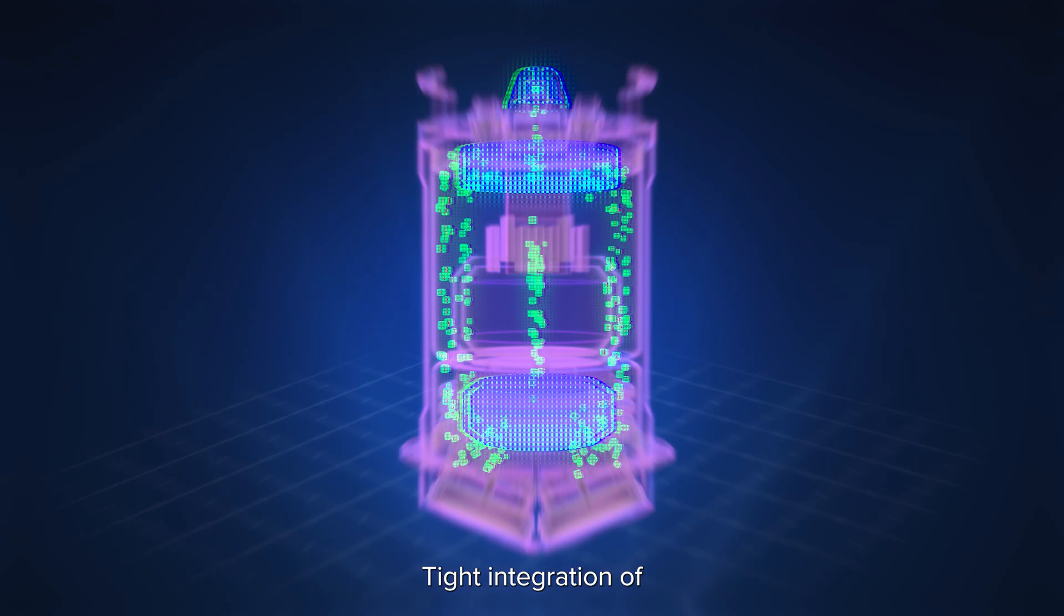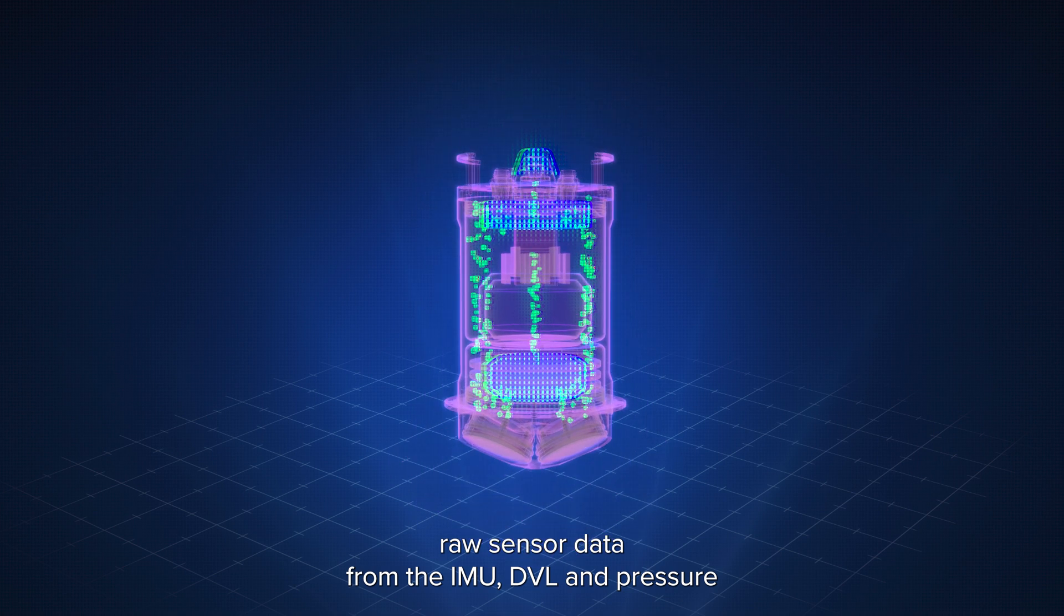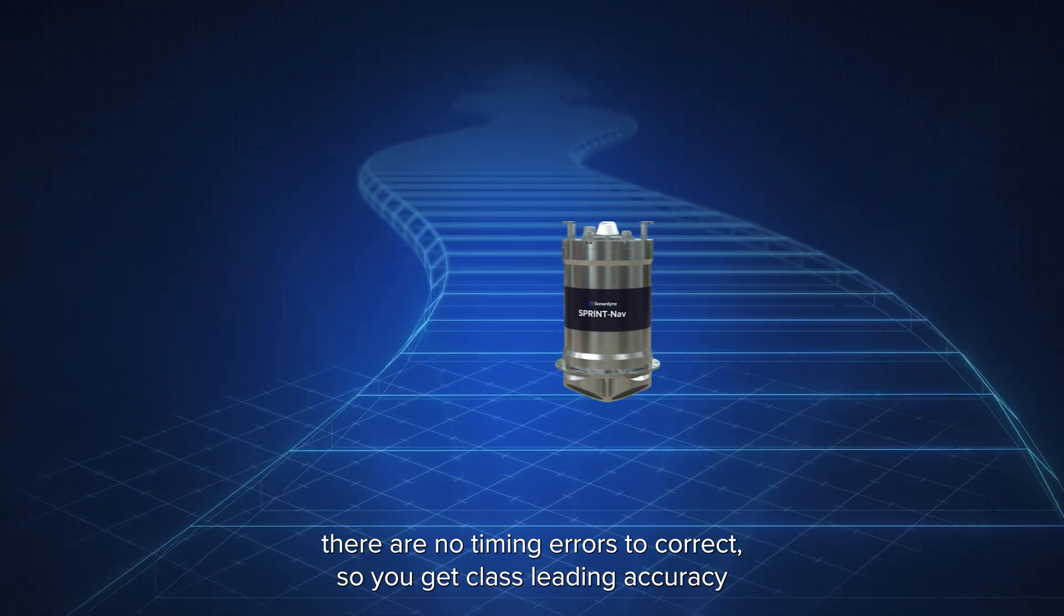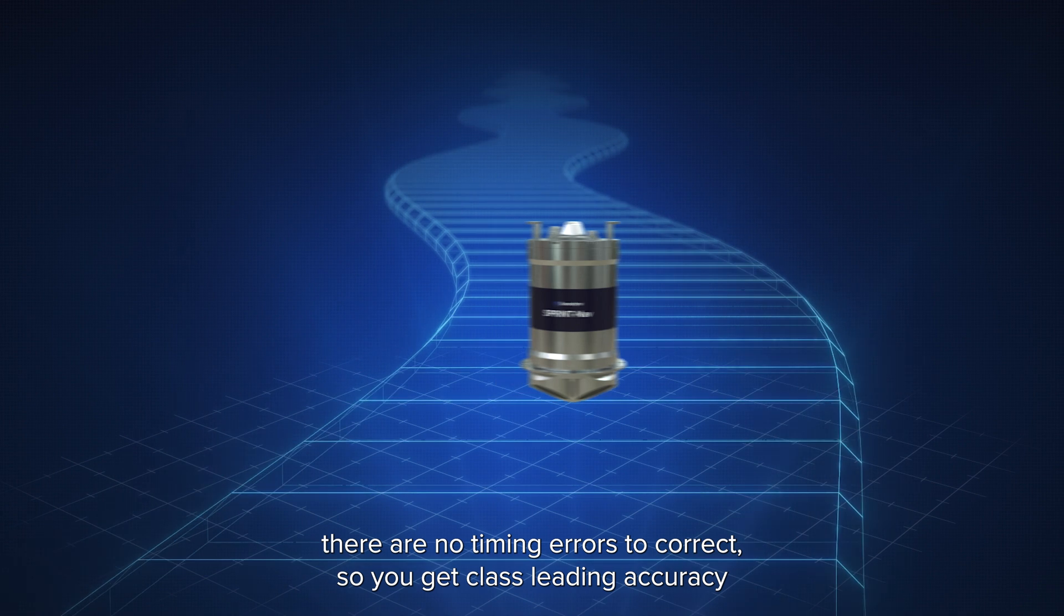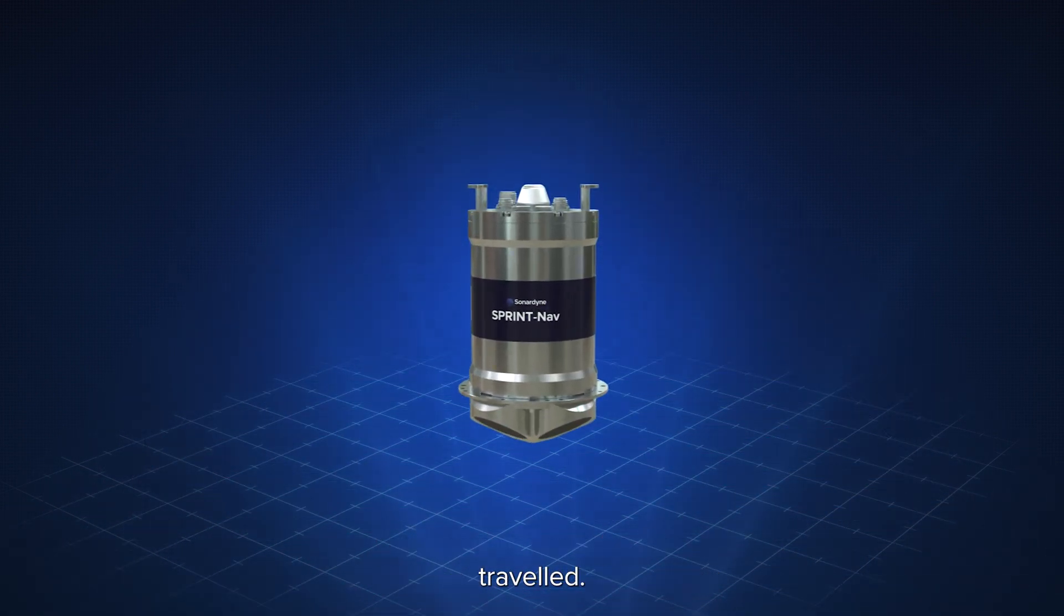Tight integration of raw sensor data from the IMU, DVL and pressure sensor, all processed on a common set of electronics, means there are no timing errors to correct. So you get class leading accuracy that's as good as a fraction of a meter over many kilometers traveled.